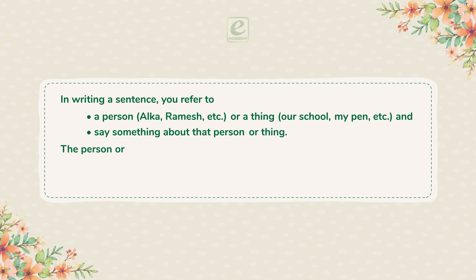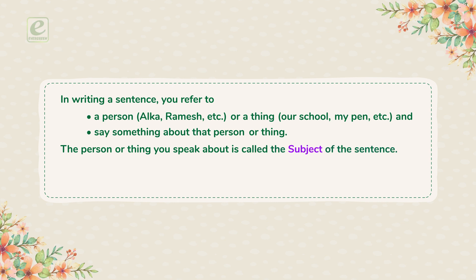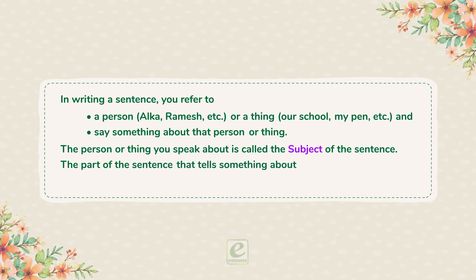The person or thing you speak about is called the subject of the sentence. The part of the sentence that tells something about the subject is called the predicate of the sentence.